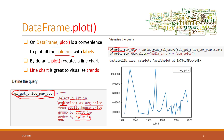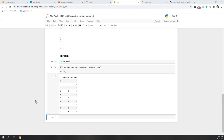We use pandas.read_sql_query to load the query into the DataFrame, and then we simply call plot, specifying x as the year the house was built and y as the average price. We can see the visualization has been created in our notebook — there's a peak in one year and also another peak in another year.